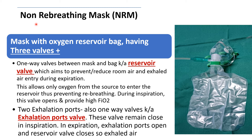The basic difference between the PRM and NRM is that the NRM contains the mask and reservoir bag, plus three one-way valves. Here in this image you can see the mask, the reservoir bag, and the three valves. One is the reservoir valve, which is located between the reservoir bag and the mask.